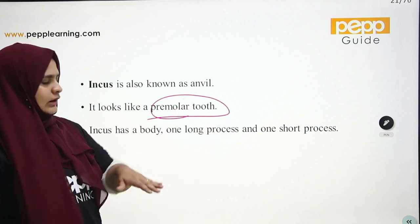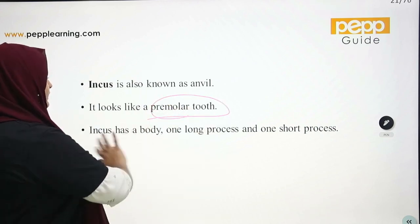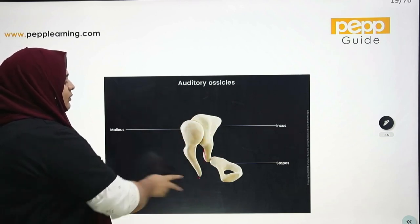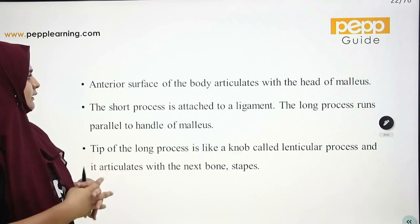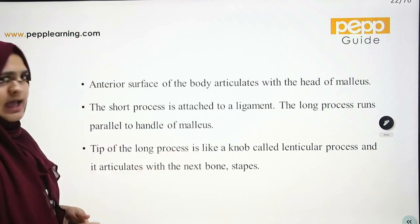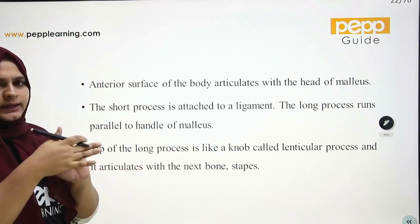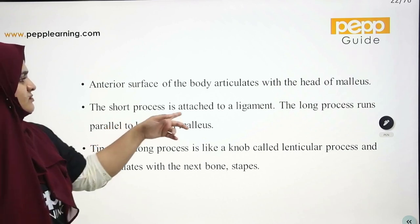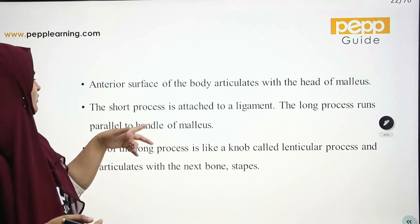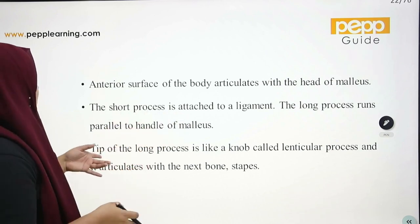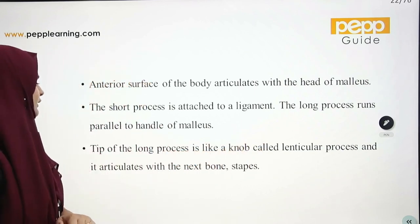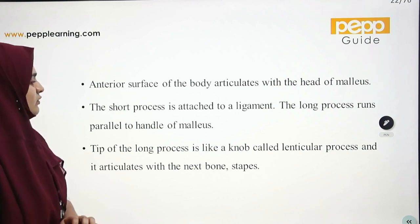The incus has a body, one long process, and one short process. The anterior surface is attached to a ligament. The long process runs parallel to the handle of the malleus. The tip of the long process is like a knob called the lenticular process, and it articulates with the stapes.